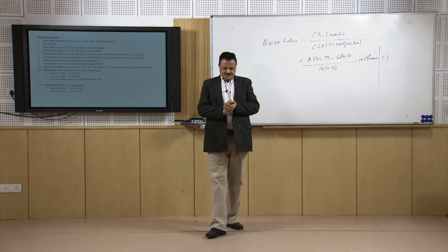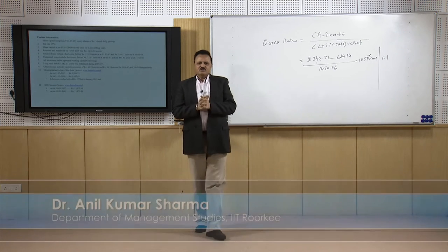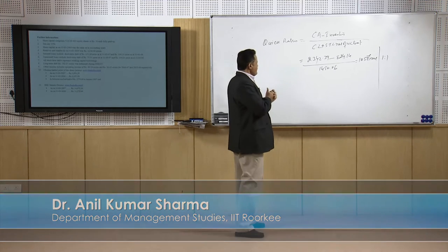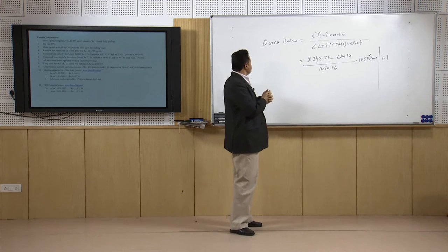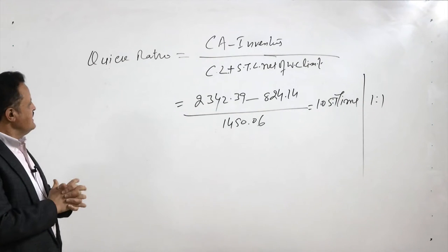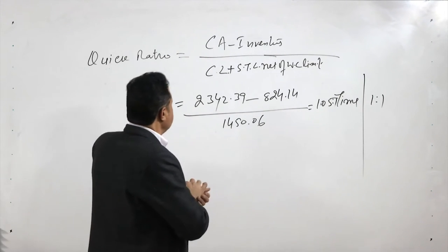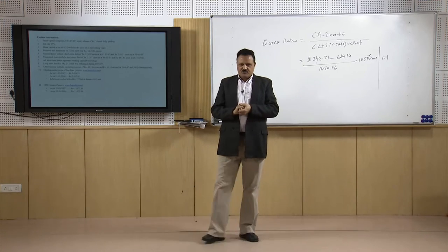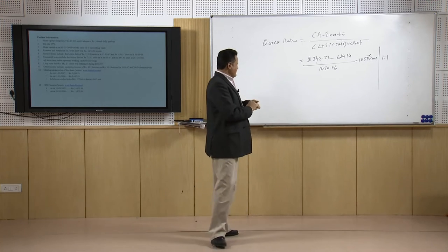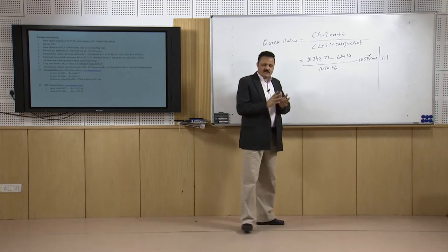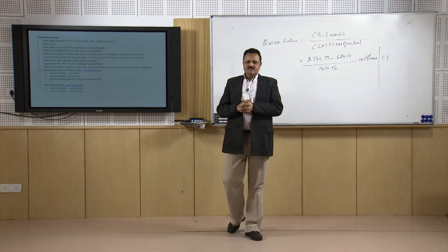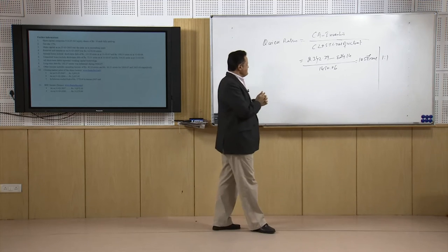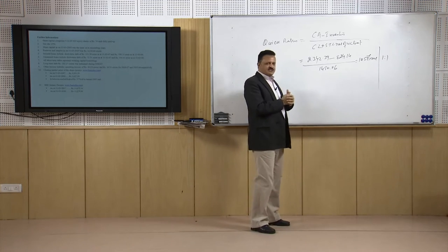Welcome students. We were talking about the calculation of liquidity ratios. In my previous discussion we discussed how to calculate the quick ratio, where current assets minus inventories are taken in the numerator. In the denominator, some changes are also required — current liabilities plus short term debt is taken in the current ratio, but for the quick ratio some adjustment should be done in the denominator also.